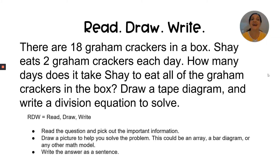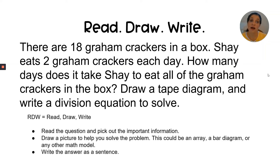It's time to use this skill in our Read, Draw, Write question — I sometimes call this the RDW. R stands for reading the question and picking out the most important information, which is annotating the question. D stands for drawing a picture to help you solve the problem — you can use any math model unless the question specifically states a certain model. The final step is writing the answer as a sentence, using your words to explain the solution and how you arrived at it.